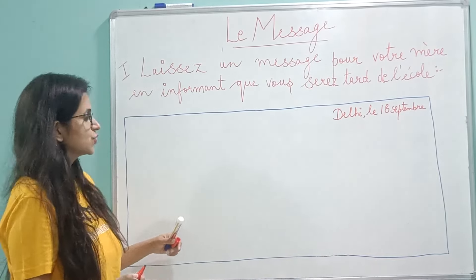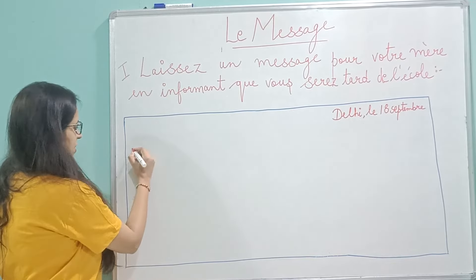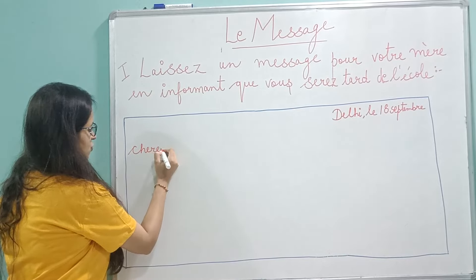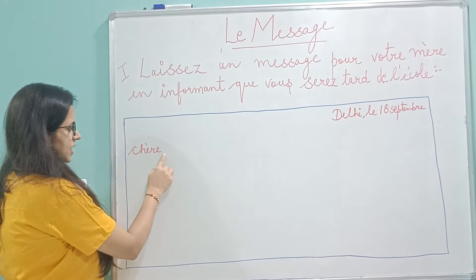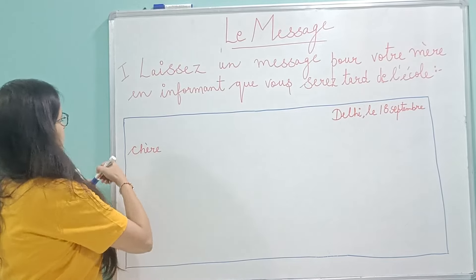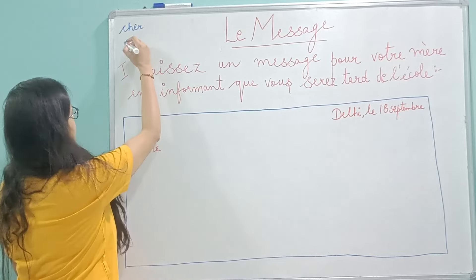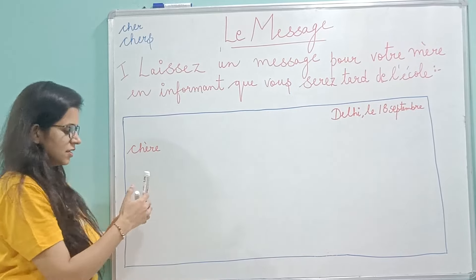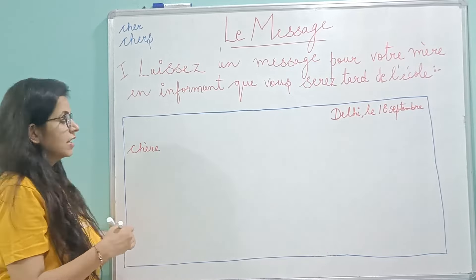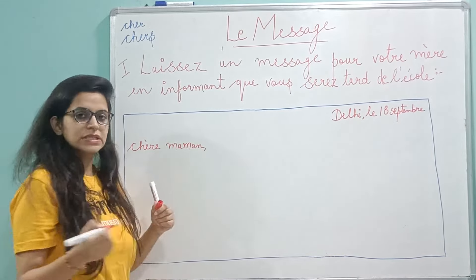Then you need to write to your mother. On the next line — you don't have to leave a line after the date — on the extreme left, we are going to write 'chère'. When you write it in the feminine form, it is C-H-E-R-E with an accent on the first E. For masculine it is C-H-E-R, and for plural it is 'chers' with an S. But here we are writing to the mother, so it's C-H-E-R-E. In a message or letter we write 'Chère maman' — Dear mother.